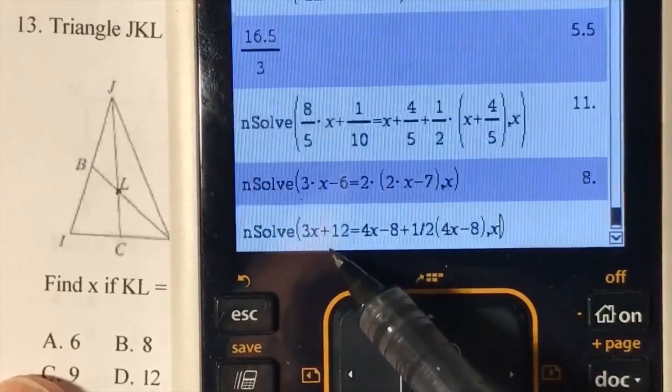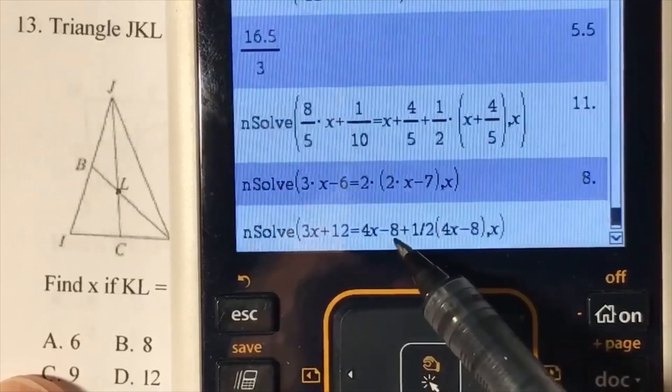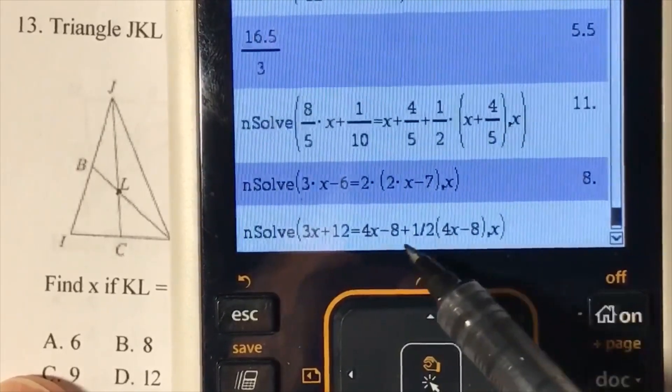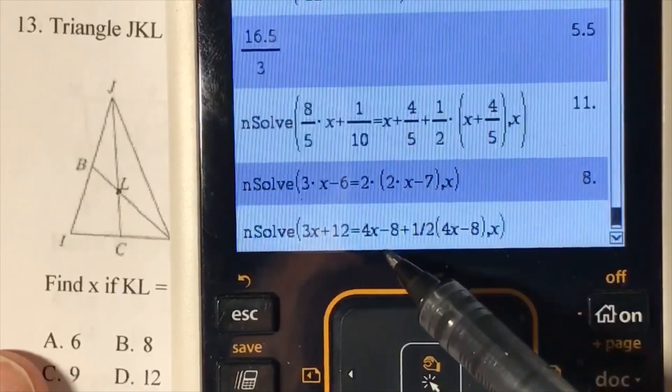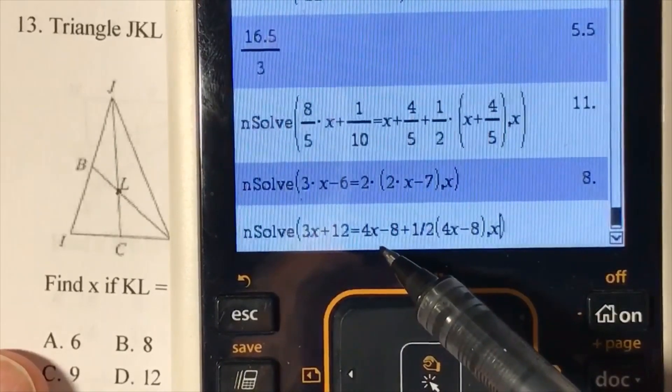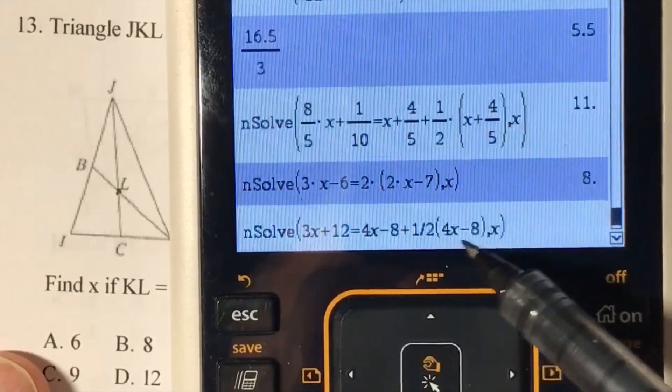The entire length of the median is equal to the parts of the median. Notice what I did here: I took half of KL to get LB.